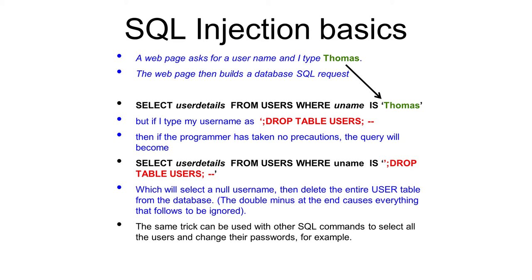And that quote closes off the username. The semicolon ends that SQL statement, and now you can run another SQL statement because the interpreter may very well simply carry on reading and be perfectly happy to accept a series of statements. And then the two minuses at the end are a comment indicator, so they turn that closing quote — which was the original one from here — into a comment. And therefore it doesn't cause a syntax error, and therefore the program continues to run perfectly happily.